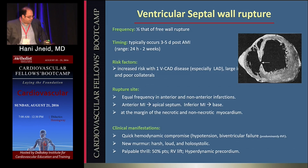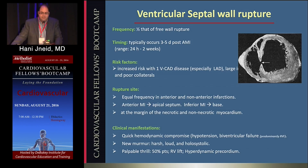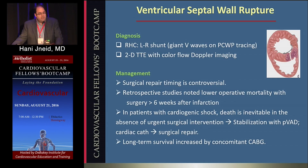With anterior MI, rupture usually occurs at the apex; with inferior MI, it's usually at the base. It occurs at the margin of necrotic and non-necrotic myocardium. Clinically, you see a patient in shock, hypotensive, with biventricular failure, usually predominantly right-sided, and a new harsh, loud holosystolic murmur with a palpable thrill, RV lift, and hyperdynamic precordium. Diagnosis is typically made with echocardiogram, although a right heart cath would show giant V-waves, which is nonspecific but very helpful.